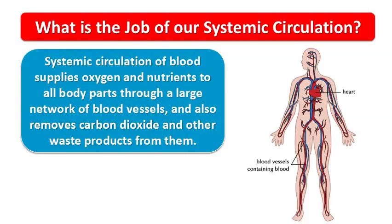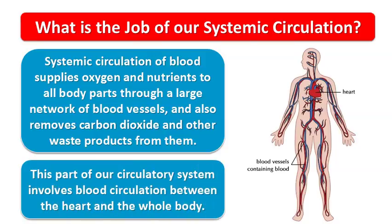Systemic circulation supplies oxygen and nutrients to all body parts through a large network of blood vessels, and also removes carbon dioxide and other waste products from them. This part of our circulatory system involves blood circulation between the heart and the whole body.